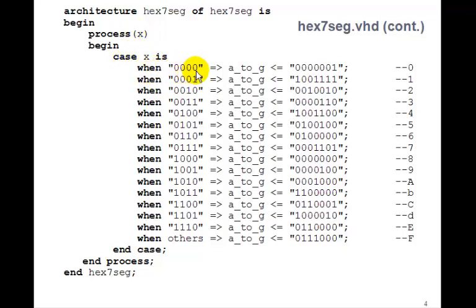Well, when X is 0000, that is we want to draw 0, we'll just turn off G. So this is the bit pattern for A, B, C, D, E, F, G, straight from the truth table.